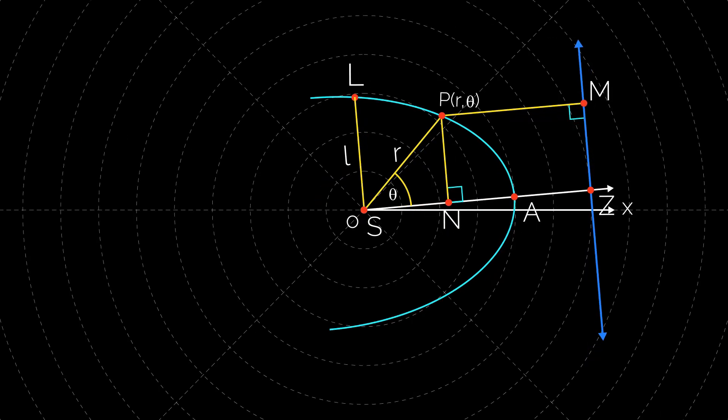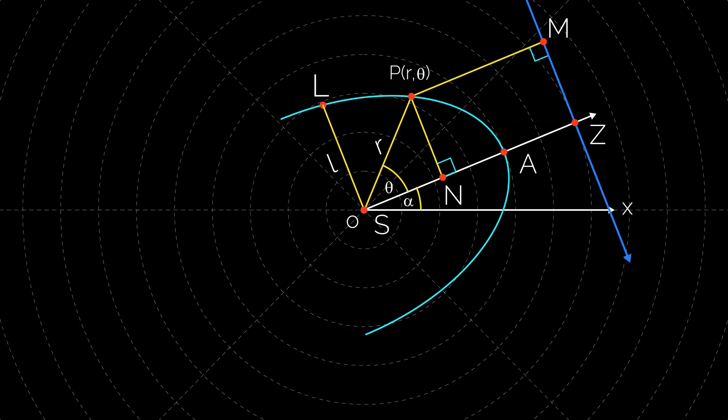If the axis SZ is inclined at an angle α to the initial line, then instead of θ we must substitute θ - α. Hence l/r = 1 + e cos(θ - α) is the polar equation of conic.